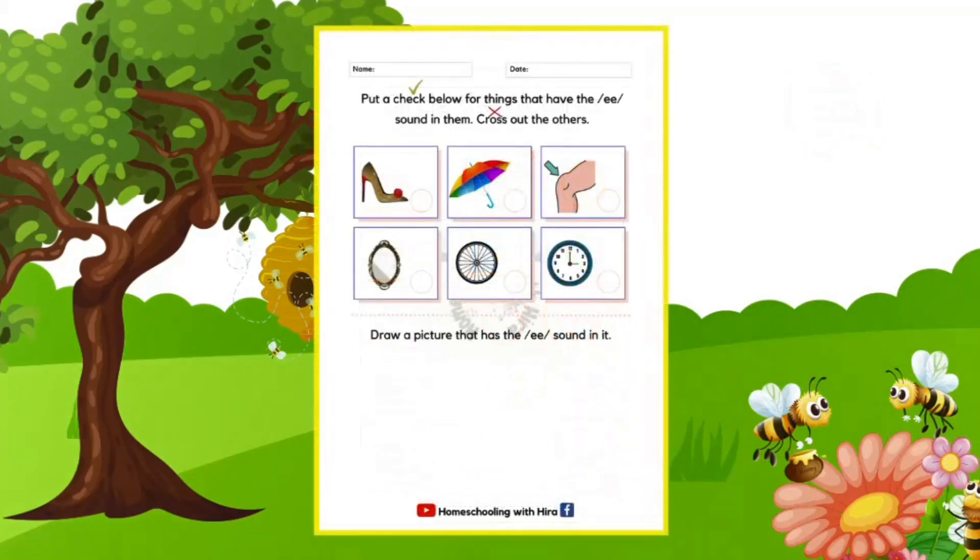Now we have another worksheet and here you need to check the pictures in which you hear the E sound and cross out the others. Listen to the words carefully. Heel. This is a heel. Sandals with a pointed heel are called heels. Do you hear E in heel? Yes, we do.